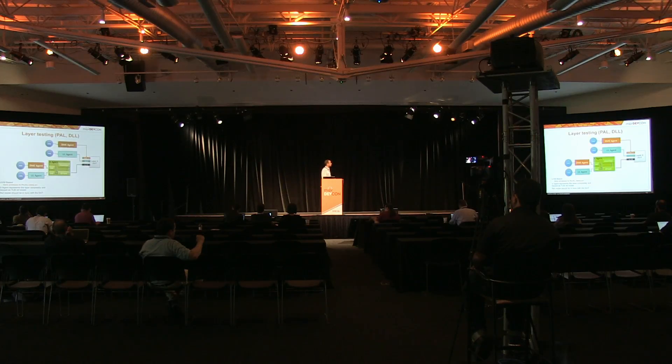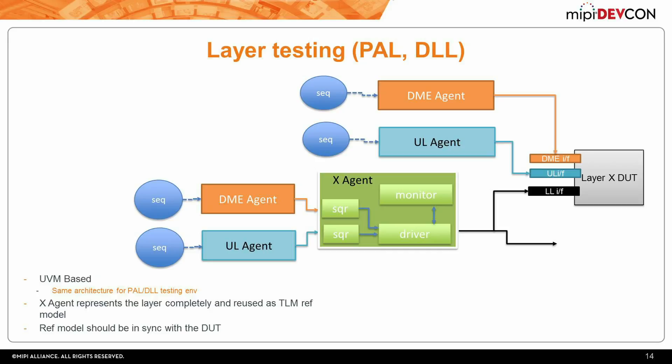This is the UVM environment for the file adapter and the data link layer. It's the same for both: here is the DUT, and here is the connection to the DME agent coming from a sequence. Here is an upper layer agent — being the network layer for the data link — and the lower layer here represents a peer device. This UVM agent implements the whole data link layer, so it has the ability to automatically respond to any requests and can act as the real device.